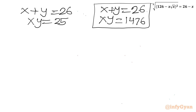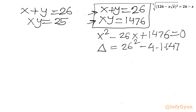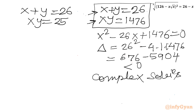Taking the second system first with xy = 1476: forming the quadratic x² - 26x + 1476 = 0. Checking the discriminant: 26² - 4·1476 = 676 - 5904, which is negative. So this system yields only complex solutions and is rejected.